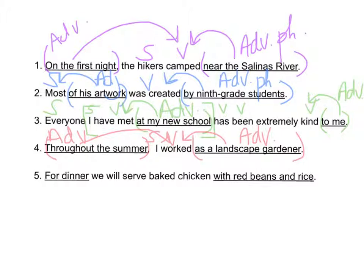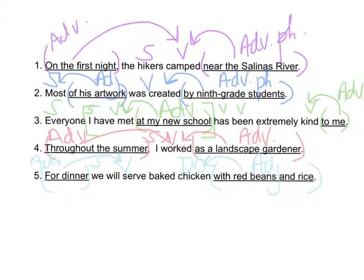'For dinner we will serve baked chicken with red beans and rice.' Marking our phrases. We will serve what? Chicken. We have a subject, verb, and this time a direct object. 'With red beans and rice' — what is it telling us more about? The chicken. Chicken is a noun, so this is an adjective phrase. 'For dinner' — we will serve for dinner, so this is an adverbial phrase.